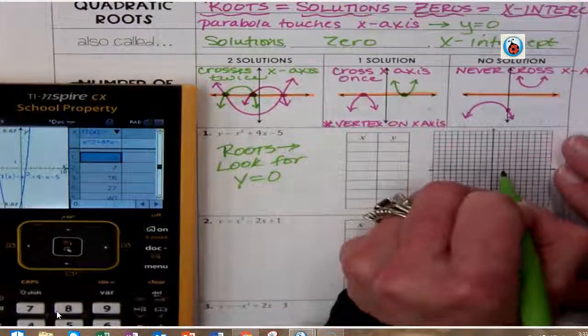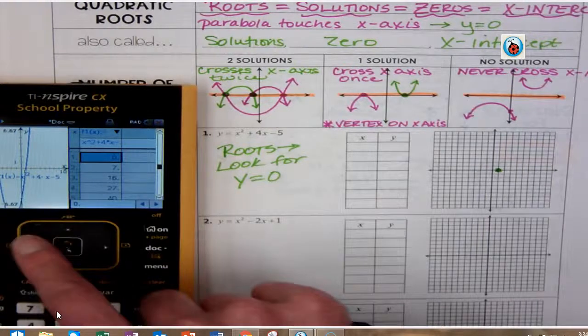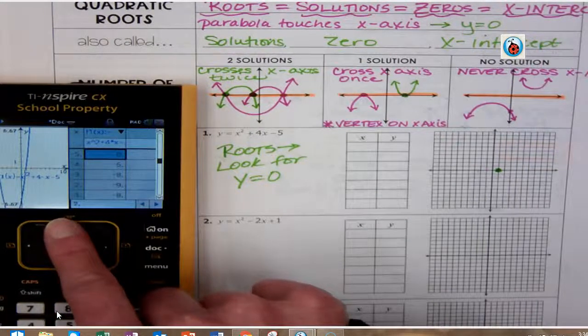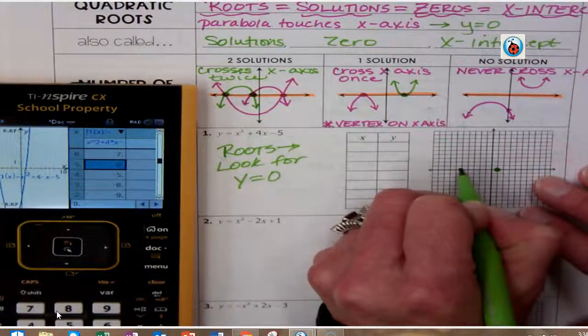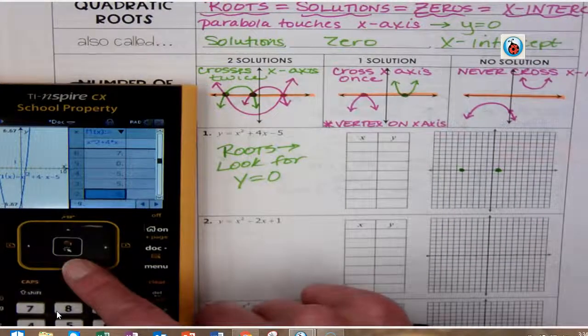And the other is going to be where x is negative 5: 1, 2, 3, 4, 5. And I can kind of look and see my vertex is right here where it starts to repeat.